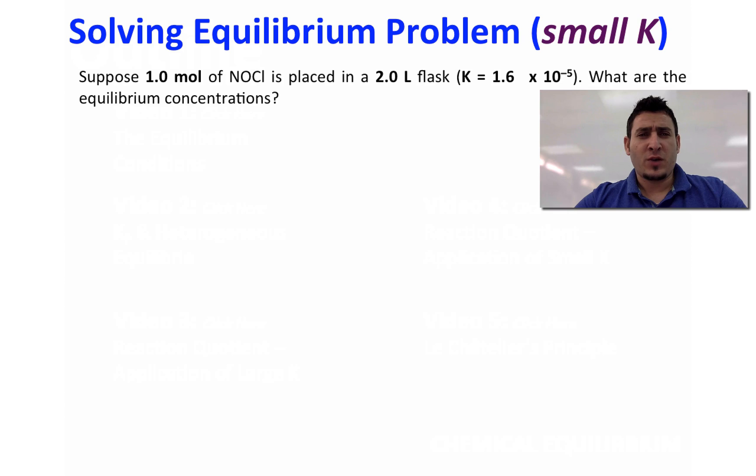Now let's consider the following problem where it says that suppose one mole of NOCl is placed in a two liter flask where K is equal to 1.6 times 10 to the power minus 5, so as you can see the value of K is small. What are the equilibrium concentrations?